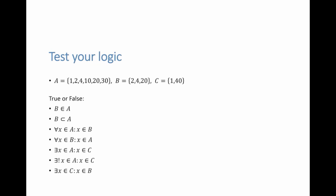Let's test our understanding. If set A has all these numbers, set B has all these numbers, and C has all these numbers, let's see if the following statements are true or false. First, is B an element of A? This is false, because B is a set and A is a set — we cannot say that B is an element of A. Is B a subset of A? 2, 4, and 20 also exist in A, so this is true: B is a subset of A.